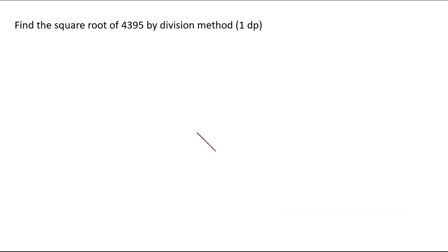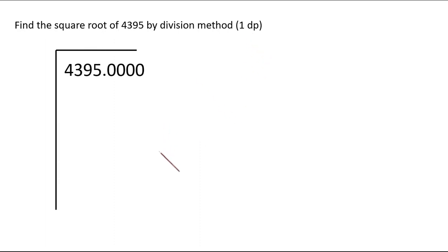Find the square root of 4395 by the division method, with an irrational answer to 1 decimal place. We write 4395, and since we want one decimal place we add 4 zeros — two pairs — after the decimal point. 95 is the first pair, 43 is the second, and 0000 forms two more pairs after the decimal point.